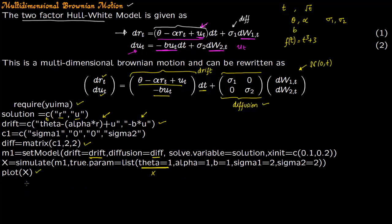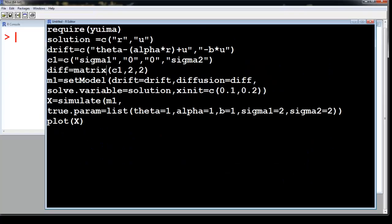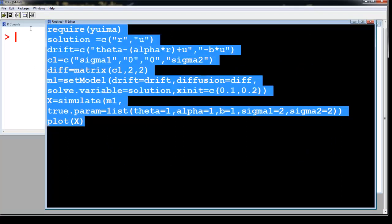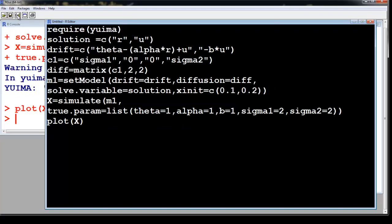And we will plot it to get two values and two graphs actually. One for r and other for u. So r is initialized at 0.1 and the second equation is u. So you can see r and u. Second is initialized at 0.2. So let us see this in R. So you can copy this from the description of the video. We are going to select this and hit the run button.